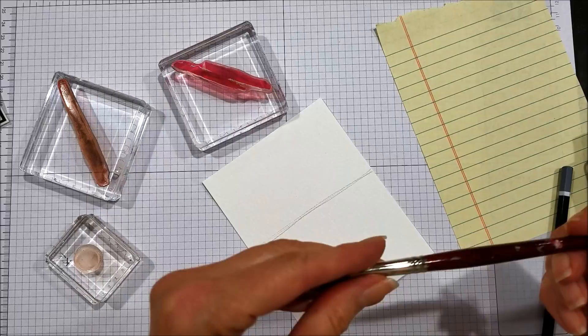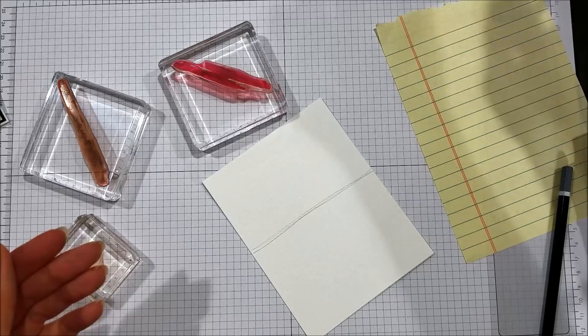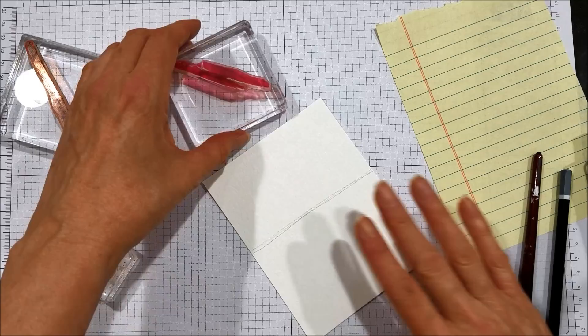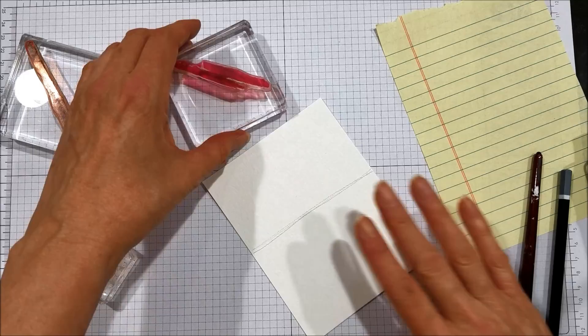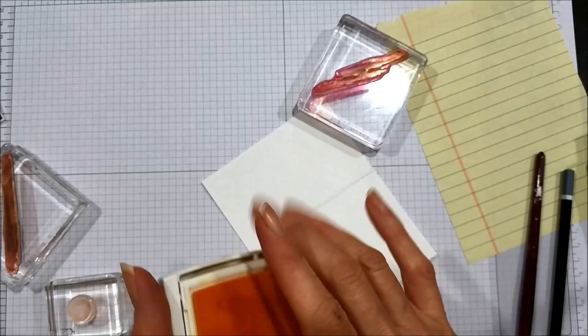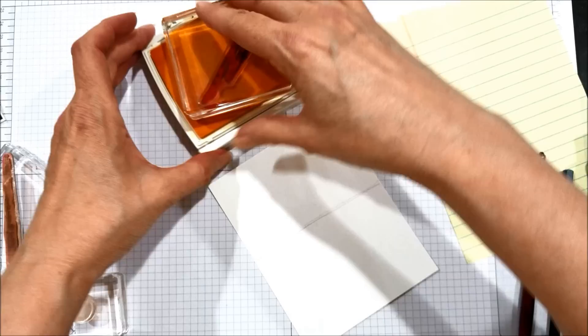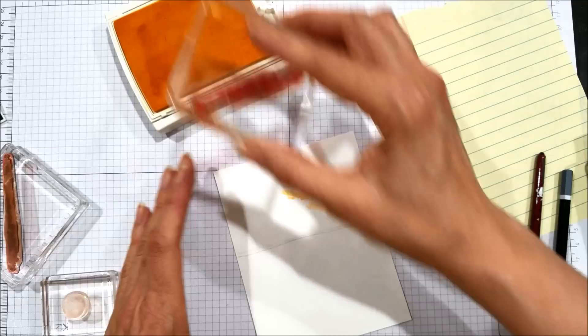Now I'm going to be softening these stamped images with water. I'm just using an ordinary watercolor brush. I've got my little jar of water off here to the side. For the first part of this, I'm just going to be using this one image.